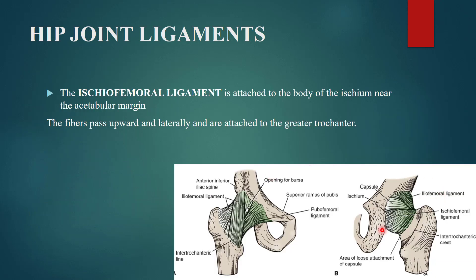The third ligament is the ischiofemoral ligament. It is attached to the body of the ischium near the acetabular margin, and its fibers pass upward and laterally to attach to the greater trochanter of the femur — hence the name ischiofemoral.